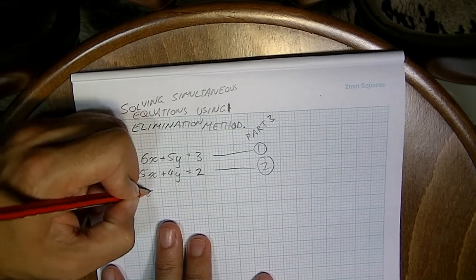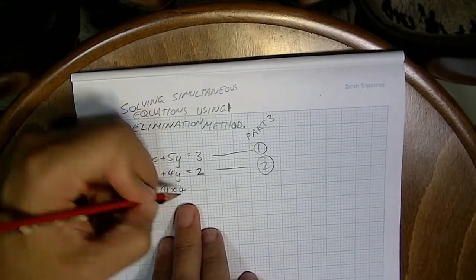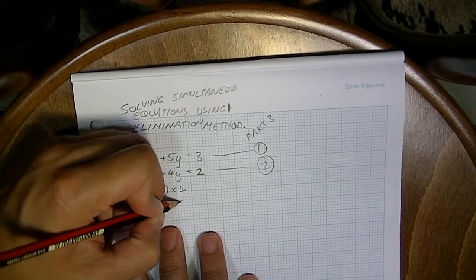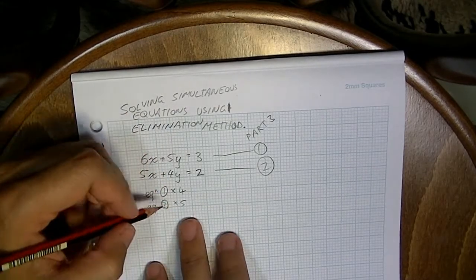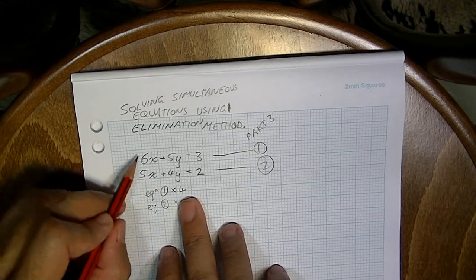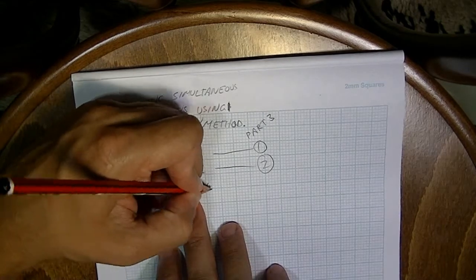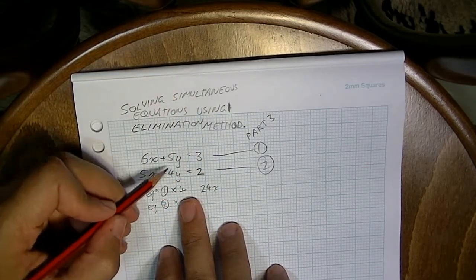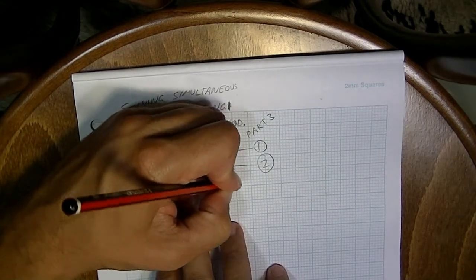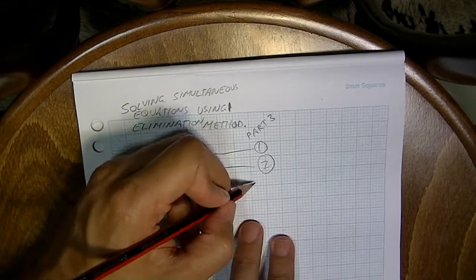Now equation one we're going to multiply by 4, and equation two we're going to multiply by 5. So what's that going to look like? Equation one times 4 first of all. 4 times 6x, that's going to give me 24x. Plus 4 times positive 5y, that's going to give me positive 20y. And 4 times 3, that's going to give me 12.